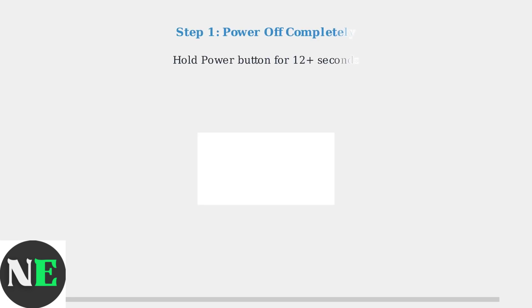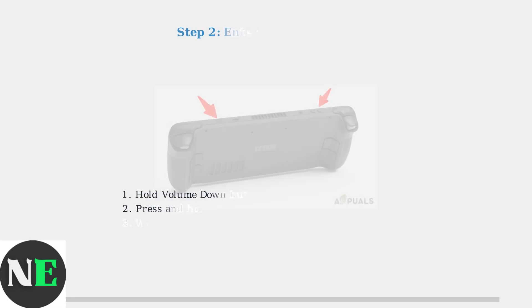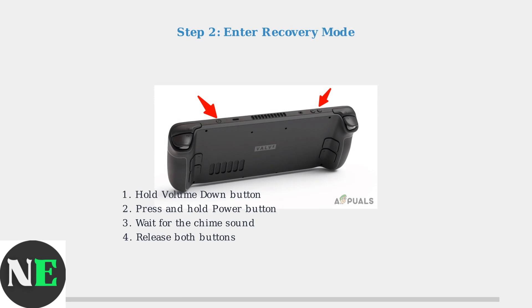The process involves a specific button combination that you need to perform correctly. Step 1: ensure your Steam Deck is completely powered off by holding the power button for at least 12 seconds — this forces a complete shutdown. Step 2: hold the volume down button, then press and hold the power button until you hear a chime. This specific combination boots you into the recovery environment.